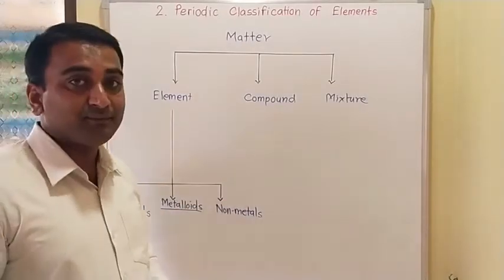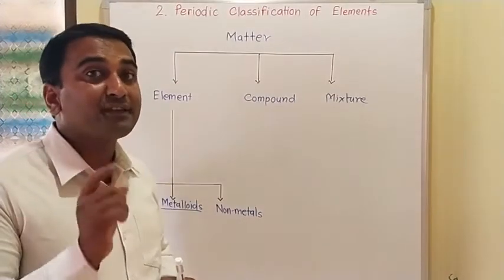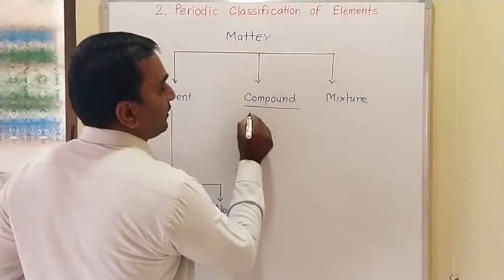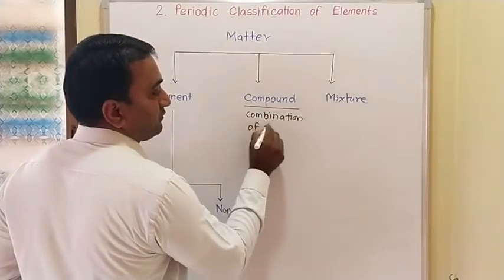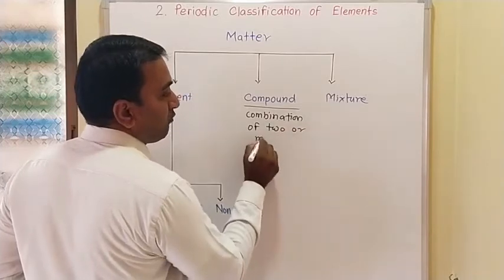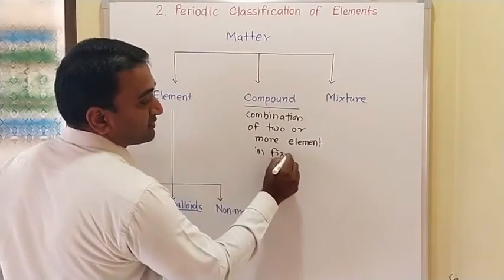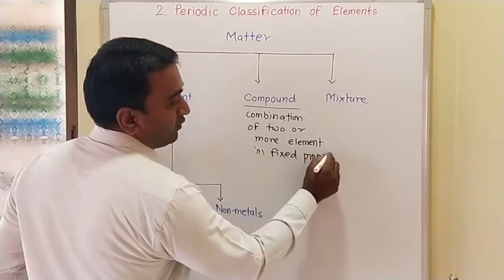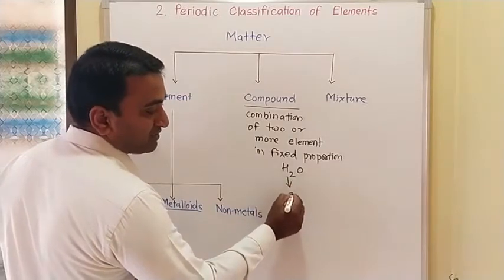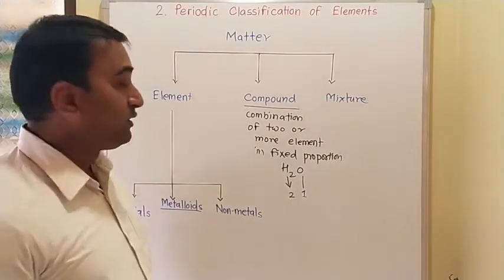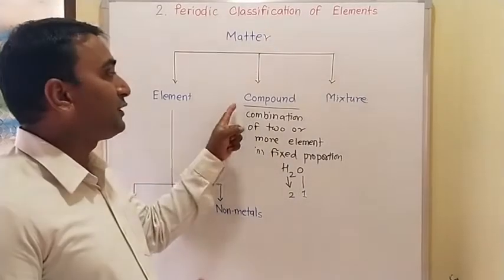What is a compound? A compound is a combination of two or more than two elements in a fixed proportion. What is meant by fixed proportion? For example, H₂O — two particles of hydrogen and one particle of oxygen. This is the fixed proportion. So when elements combine in a fixed proportion, that converts into a compound.